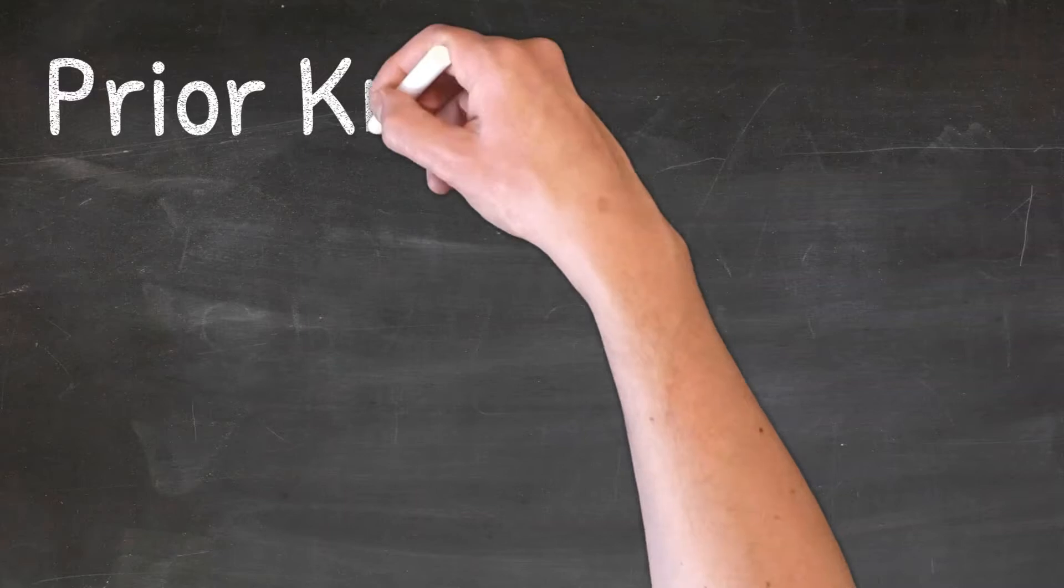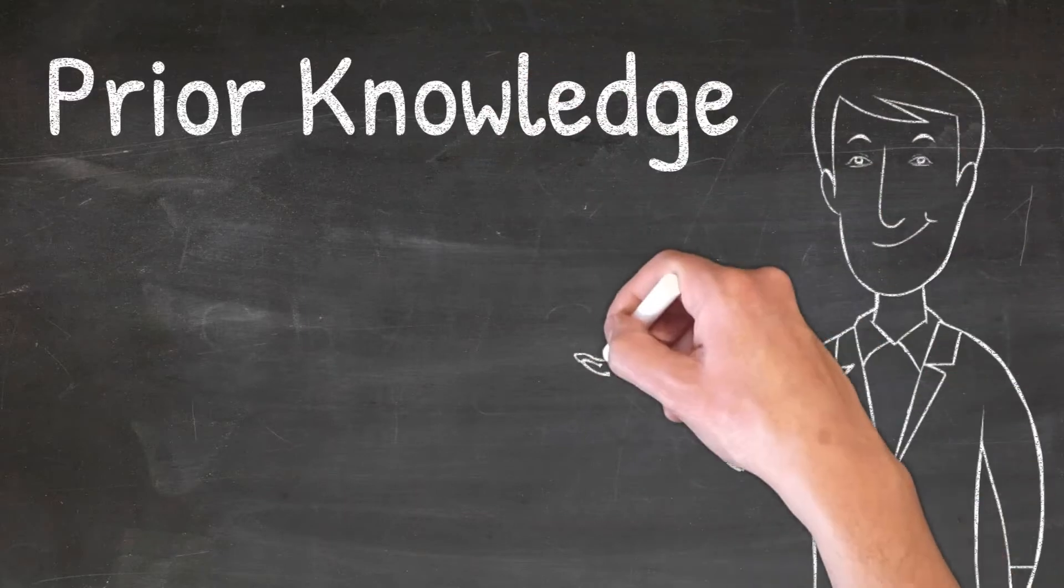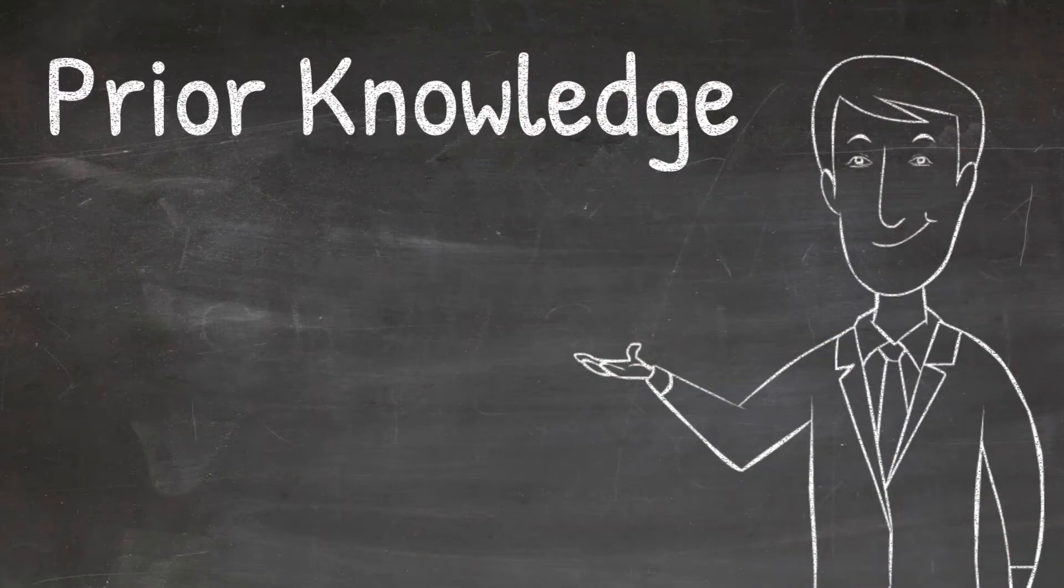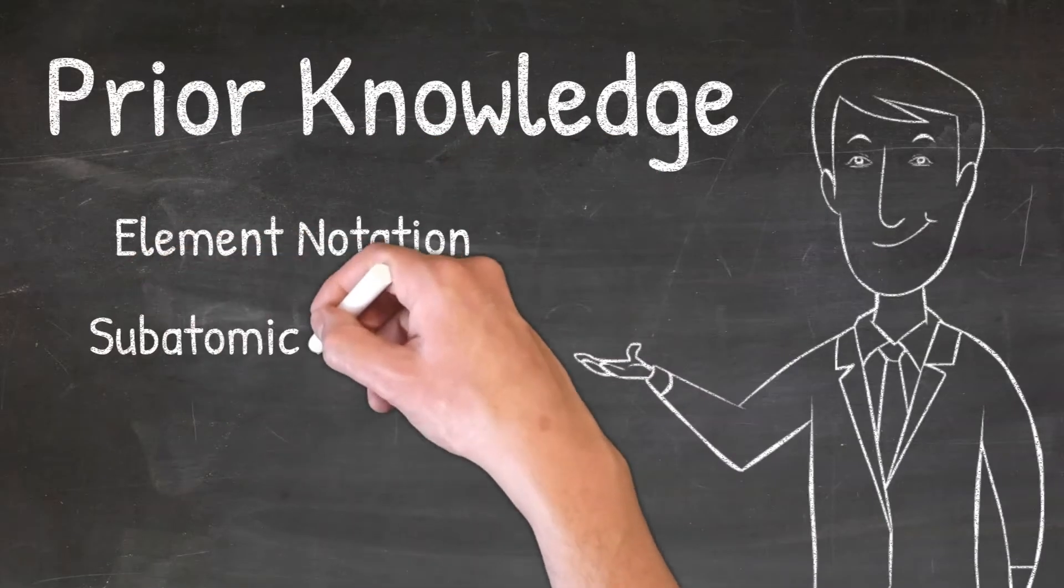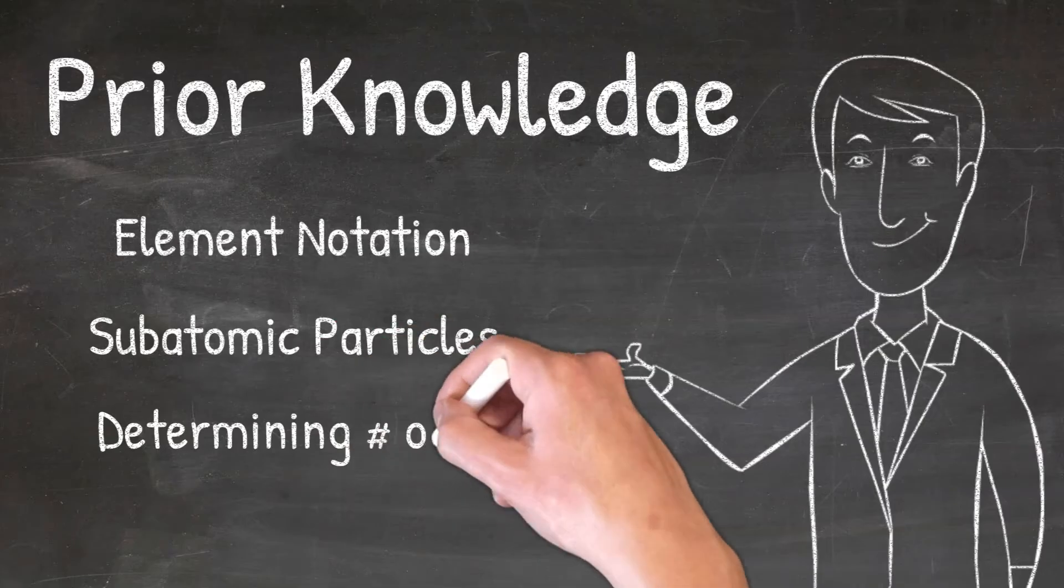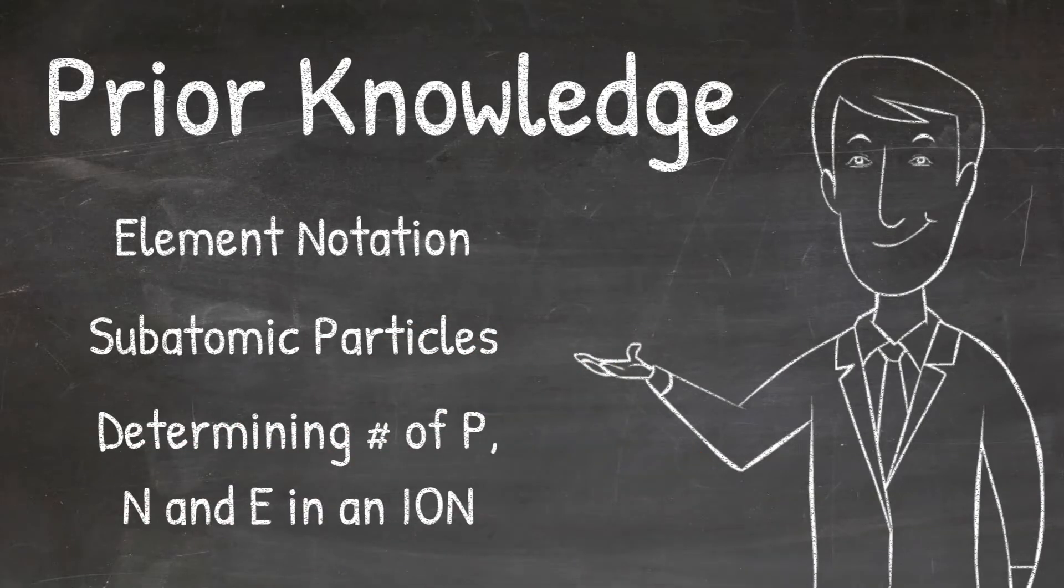In order to understand the difference between a cation and anion, there are a couple concepts you need to remember from other videos: element notation, subatomic particles, and determining the number of protons, neutrons, and electrons in an atom. If you don't remember this information or need a refresher, please check out our videos on all of these topics.